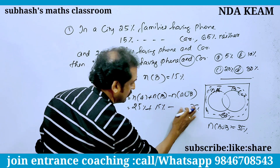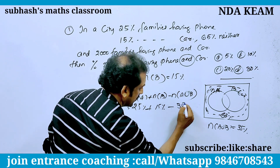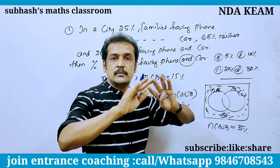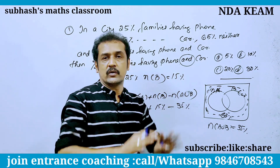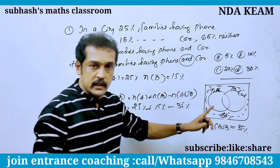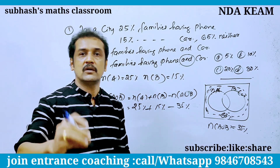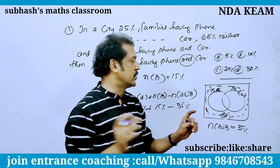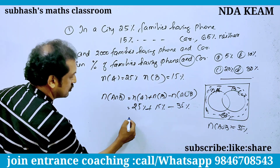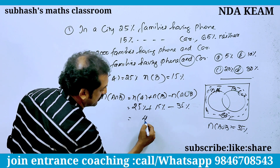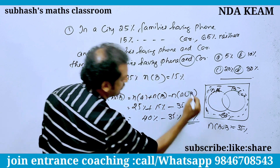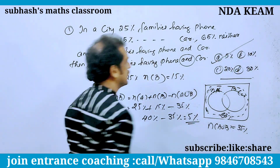N of A union B means 35%. We have: 25% plus 15% equals 40%, minus 35%, so the answer is 5%.